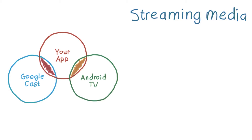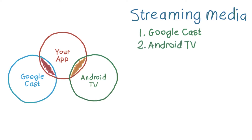Whether your app is on Android, iOS, or web, your first step in building for the living room is adding Google Cast functionality. This will ensure your users will be able to stream on all Google Cast ready devices, including Chromecast and Android TV. Once you've finished adding Google Cast support, you can then extend your Android app using the Leanback library, allowing your users to launch and control the app from their Android TV.